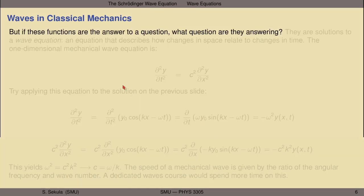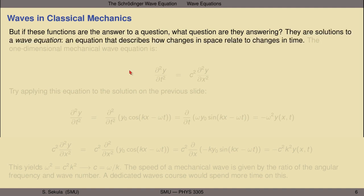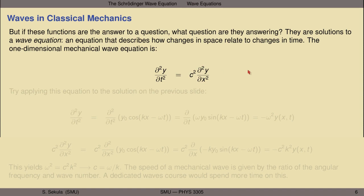These functions answer some question, and if they're the answers to a question, what is the question? They are all solutions to a wave equation — an equation that describes how changes in space relate to changes in time. The one-dimensional mechanical wave equation, which tells you about vertical displacements as a function of horizontal position and time, is simply given by the second derivative with respect to time of the vertical amplitude y, equal to a constant squared times the second derivative with respect to space of y, where y is a function of x and t. So if you try applying this wave equation to the solution, you'll see the following.